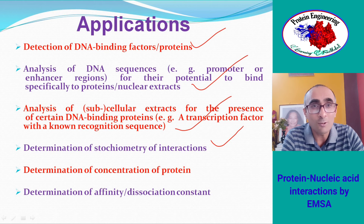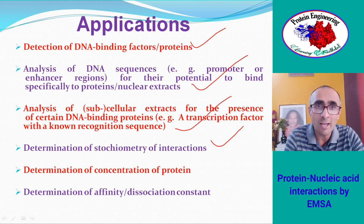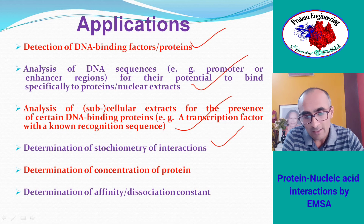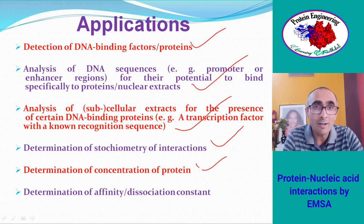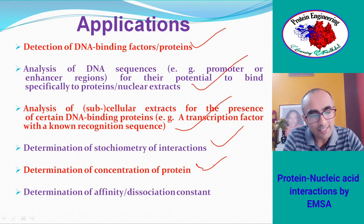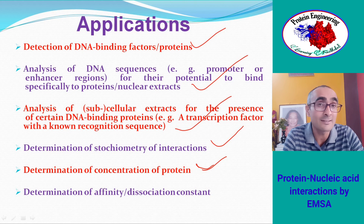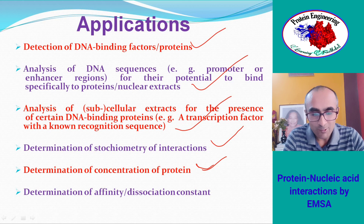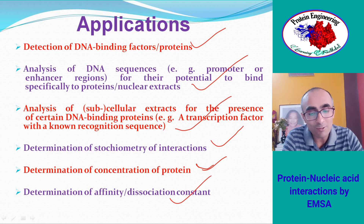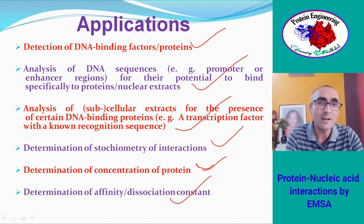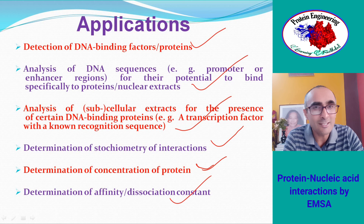To determine stoichiometry, you need to know the amount of protein present in the experiment and the precise amount of probe. If you know both, the stoichiometry can be determined using EMSA. Furthermore, if you know the amount of probe and the stoichiometry, you can determine the concentration of DNA-binding protein in the sample. And if you have the protein concentration, stoichiometry, and amount of probe, you can also determine the affinity constant — the quantitative value of the affinity, or binding constant, between the DNA and the protein.